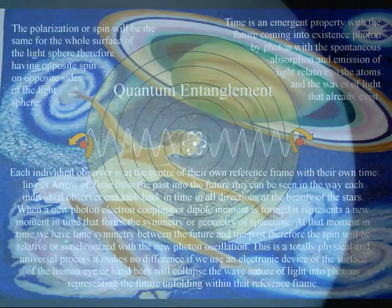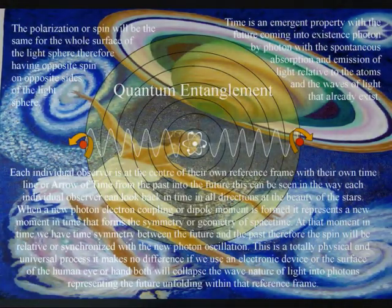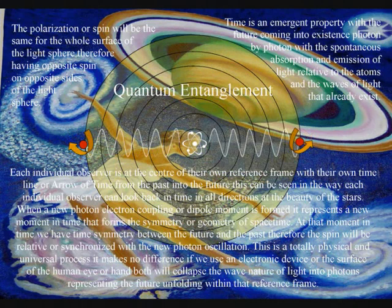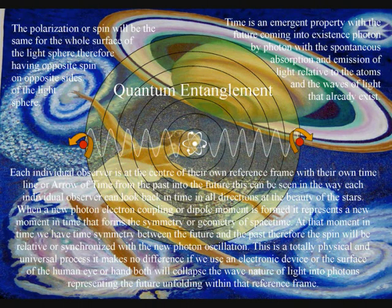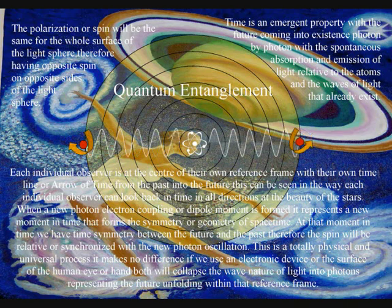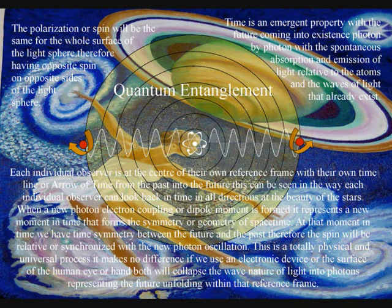When a new photon-electron coupling, or dipole moment, is formed, it represents a new moment in time that forms a symmetry or geometry of space-time. And at that moment in time, we have time symmetry between the future and the past.